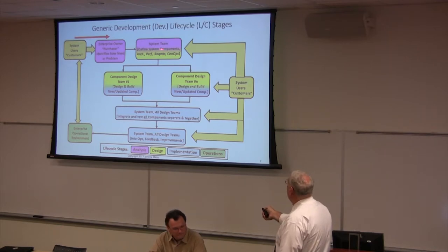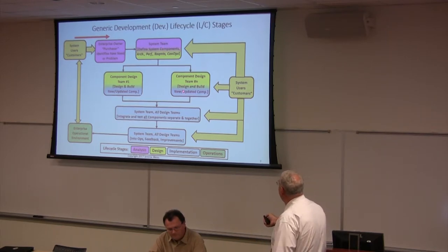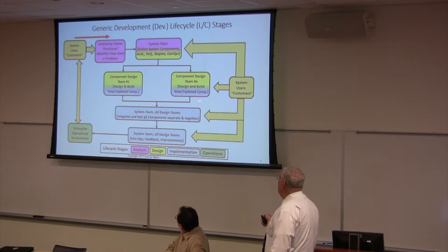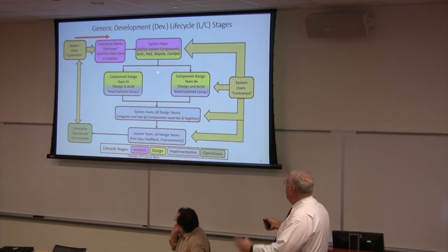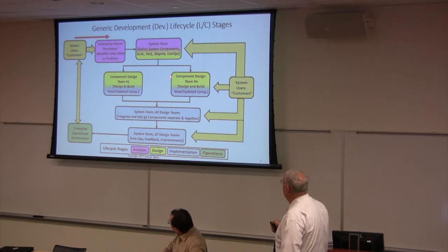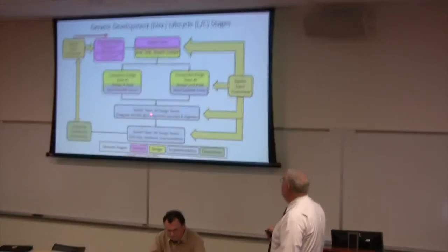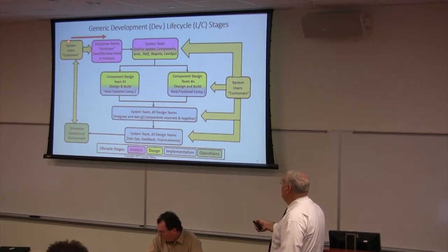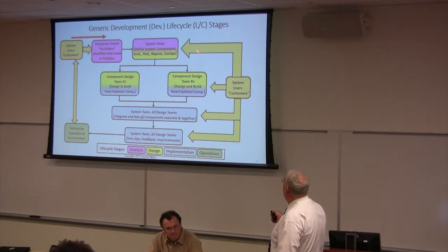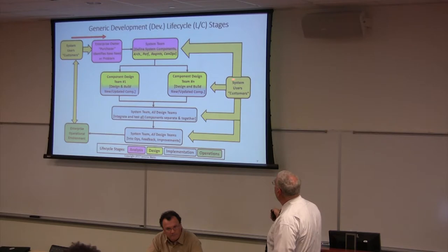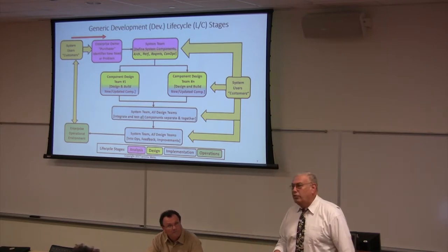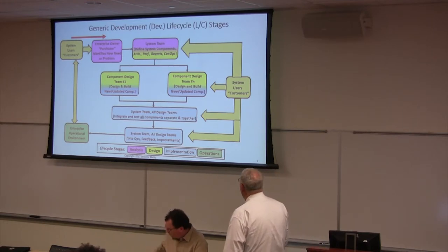You decide you need more than one component, you do the design process, you start to integrate things and build up to the full system, put it into operations, and you're going to start getting feedback. One of the things you need to do through these different phases is you need to be talking with the consumer — the person ordering this, the person who's paying for it. What do you need?